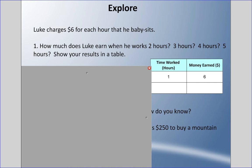For example, he works one hour, he's going to make six dollars. If he worked two hours, he should make twelve dollars; three hours, eighteen dollars. Is there any pattern going on that you can see that might help someone like Luke find out how much he would make for five hours?